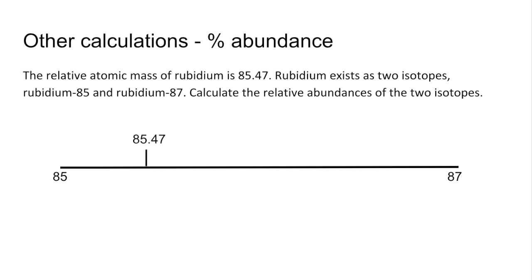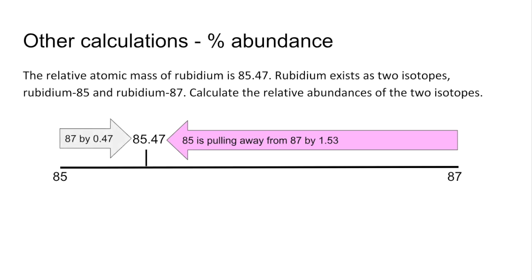So the 85 isotope is pulling away from 87 by 1.53. So if you start there, to get to the average, it's 1.53. That means the 87 is pulling in the opposite direction by 0.47. The difference is 2.